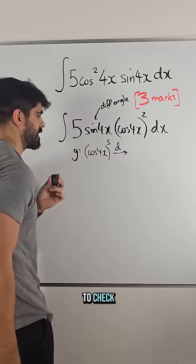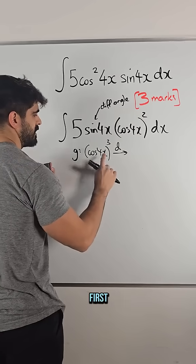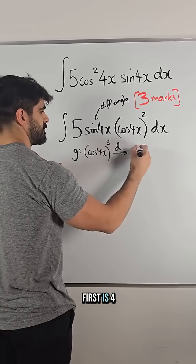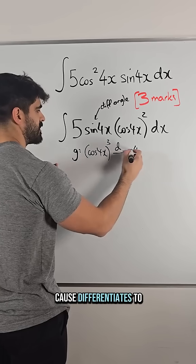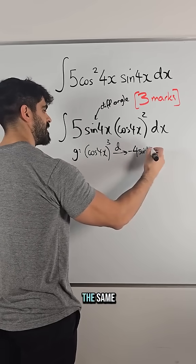Now we differentiate to check. So you differentiate this first, differentiate the angle first is 4. Cos differentiates to minus sin, angle stays the same.